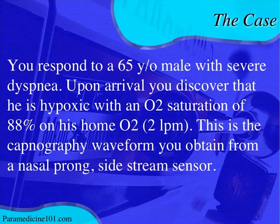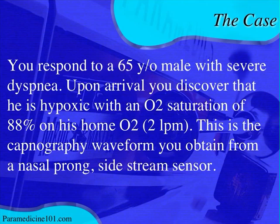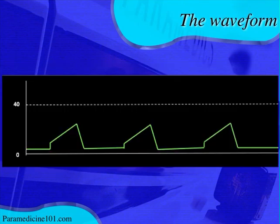You respond to a 65-year-old male with severe shortness of breath. When you get there, you discover he's hypoxic — he's got an O2 sat of 88% and he's already on home oxygen. This should tell you that he has some sort of respiratory ailment. Usually we say COPD, though CHF and asthma patients can also have home oxygen. He's an elderly male and probably has other history just from age alone.